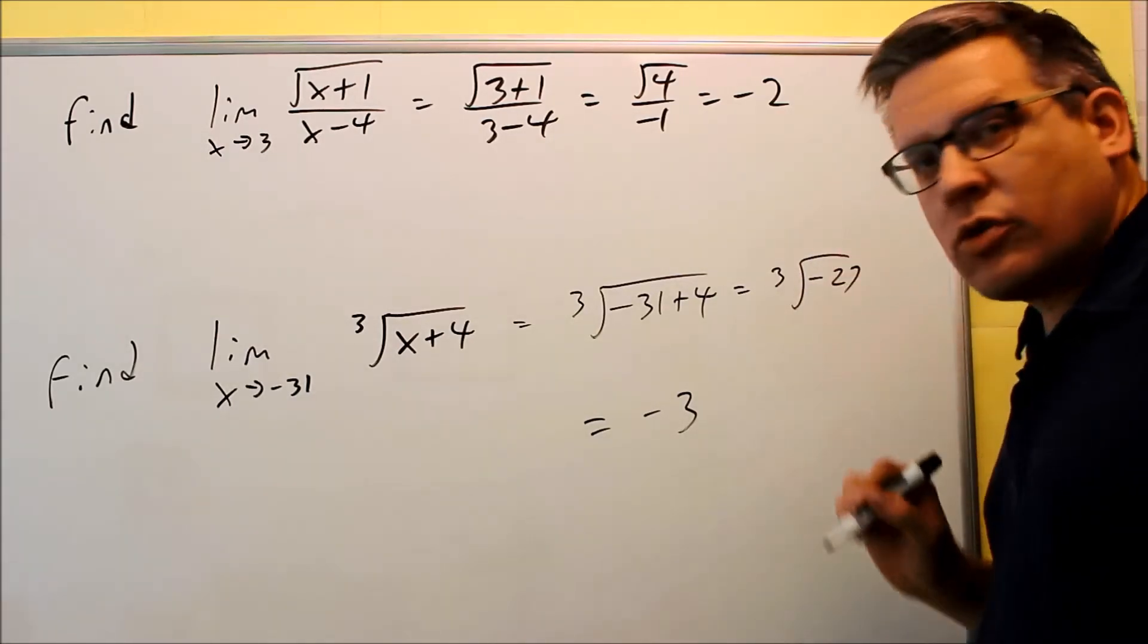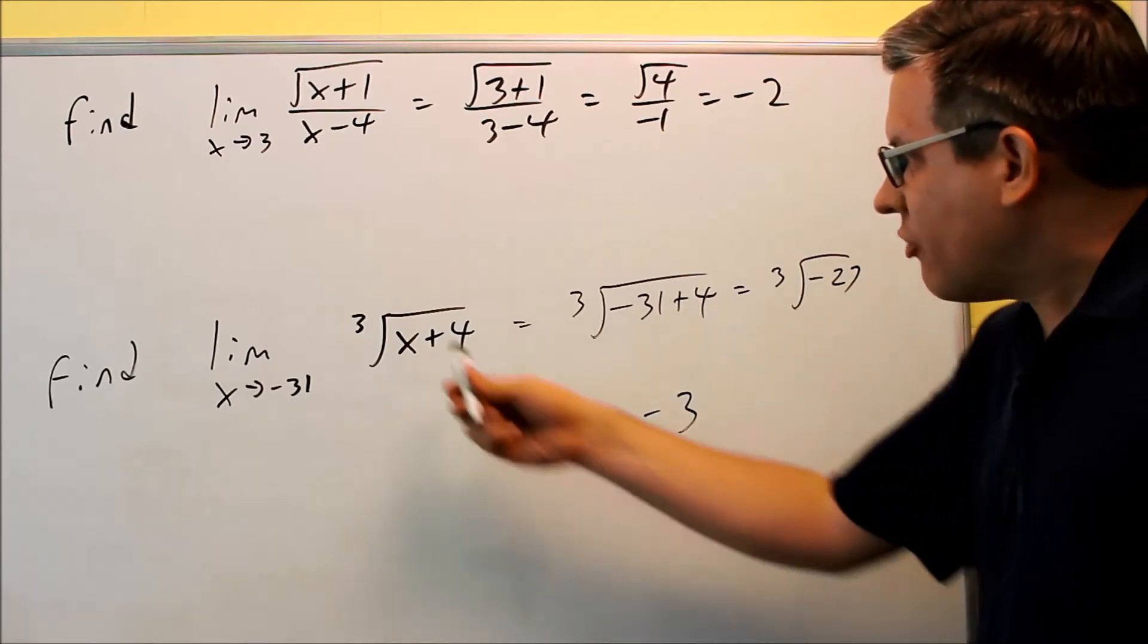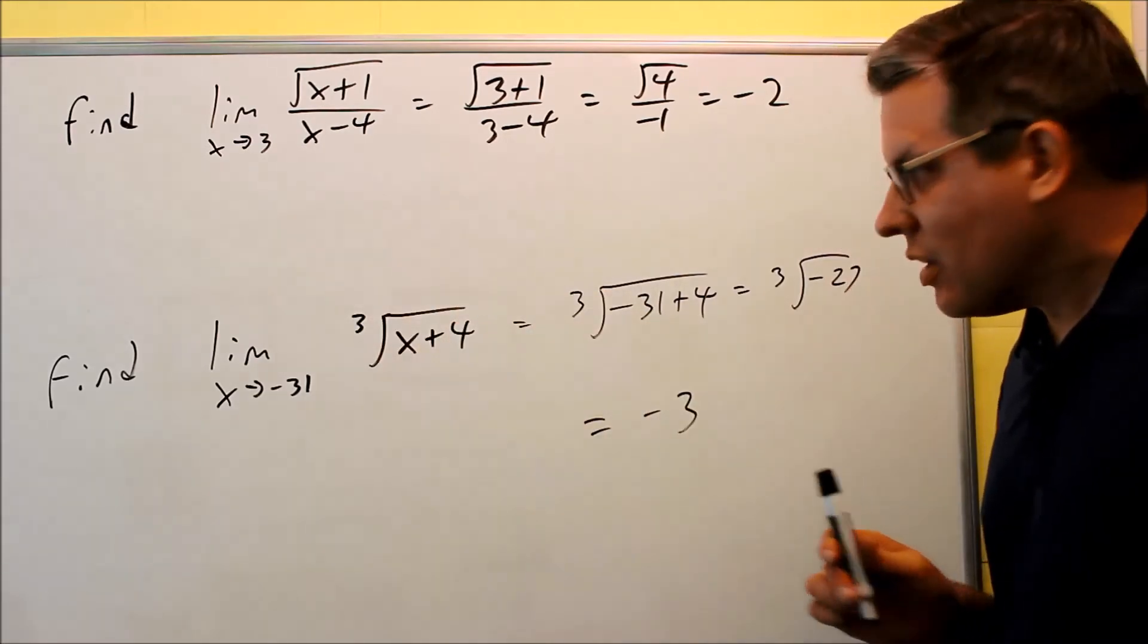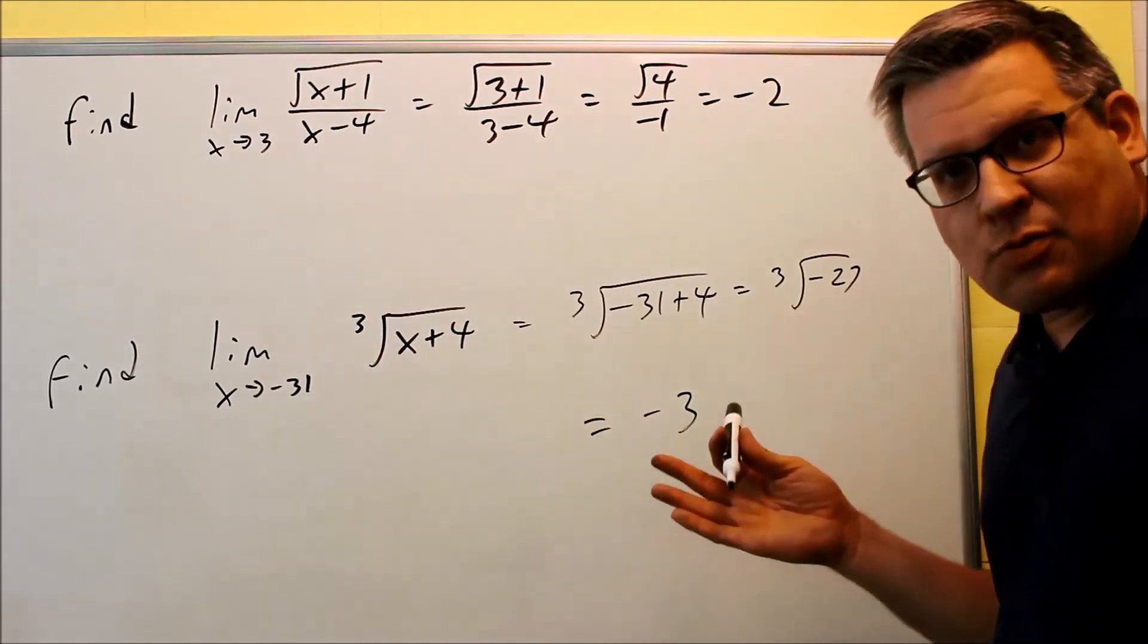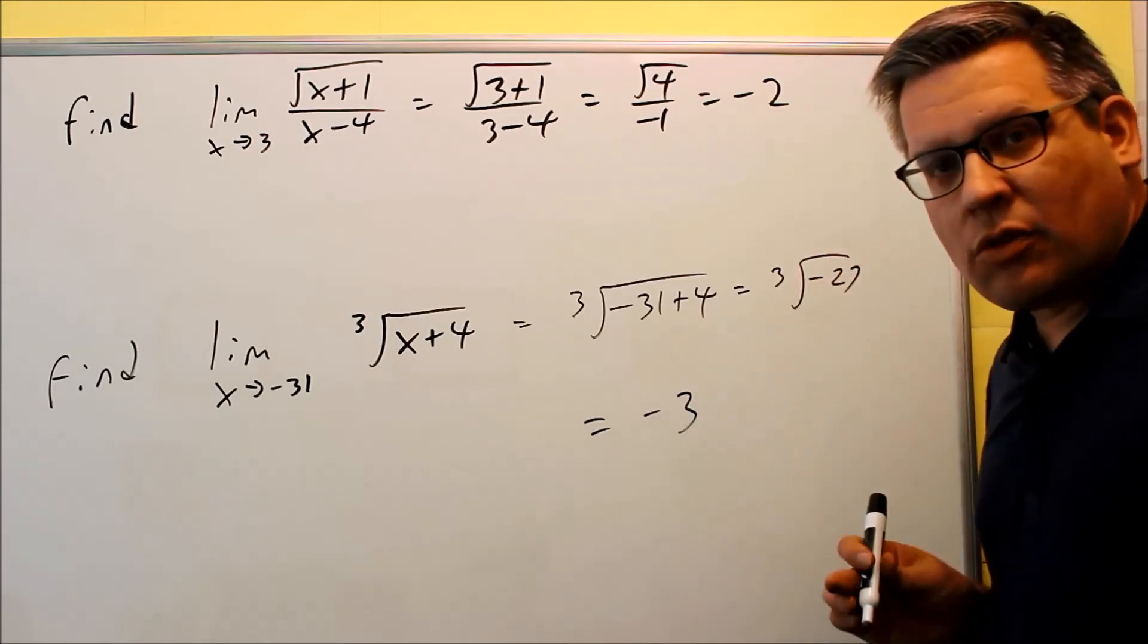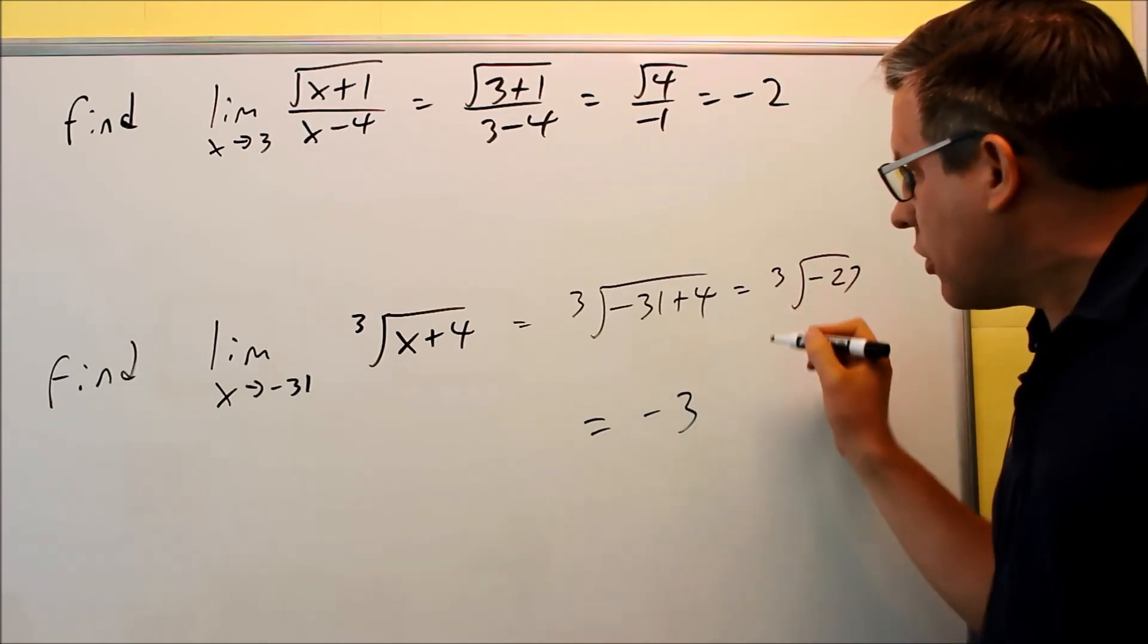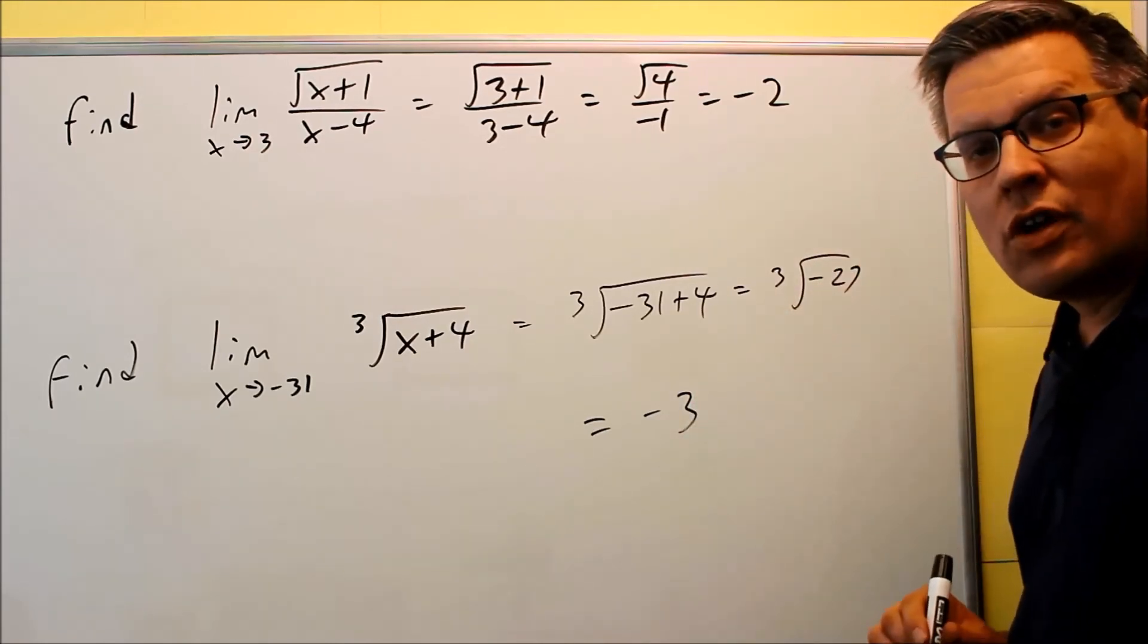However, with even roots, you couldn't. So in this case, if it was a square root, for instance, then this limit would not exist because the answer would give you something that's undefined. But in this case, we are able to do it, and we've got an exact value of negative 3.